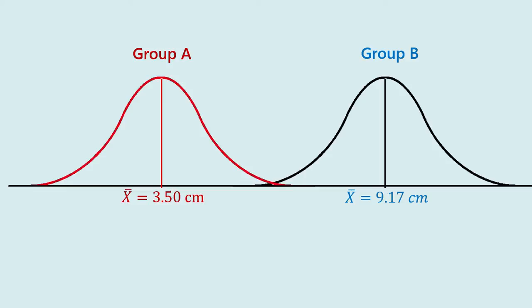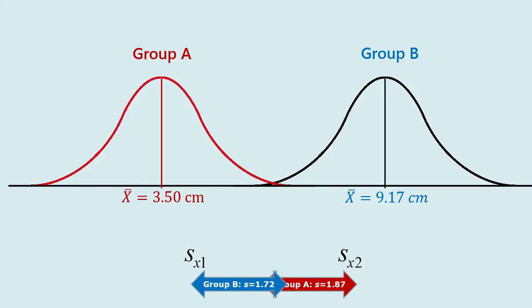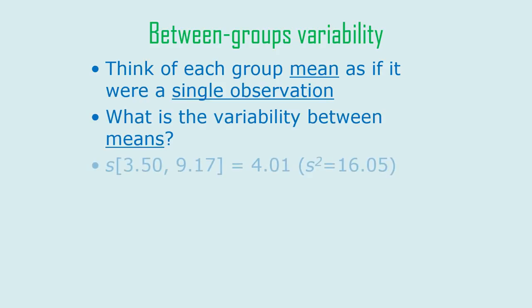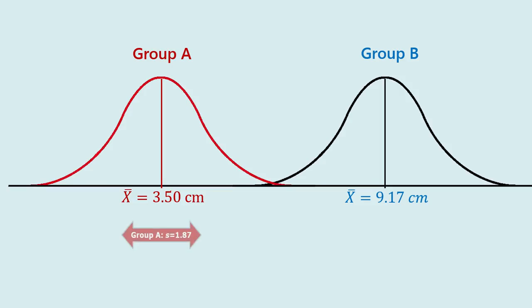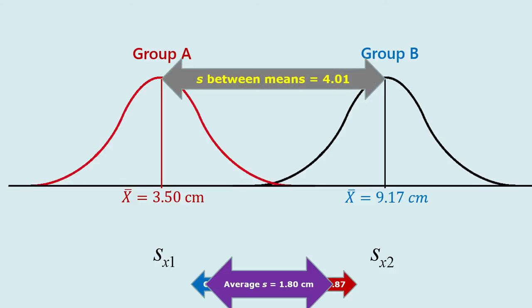One mean is 3.5 centimeters, the other is 9.2 centimeters. The average within-group standard deviation is 1.8 centimeters — that's our average variability among observations due to random sampling. If we think of each group as a mean, the variance between those two means is 16 and the standard deviation is about 4. Our average standard deviation within groups is 1.8, and the standard deviation among the means is 4 — much bigger. So here we would probably conclude that those two means are actually different in the population.